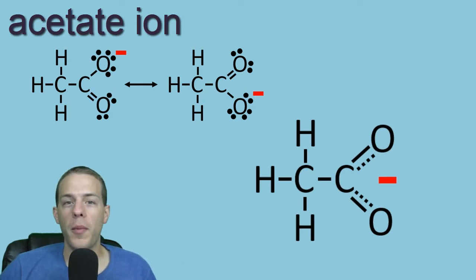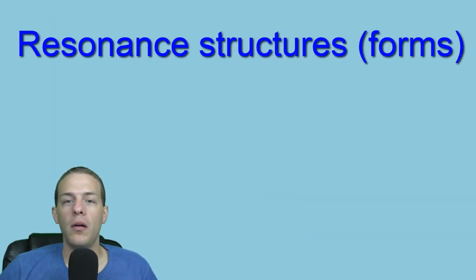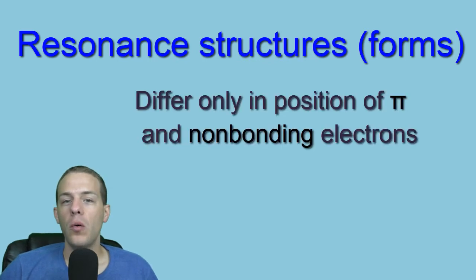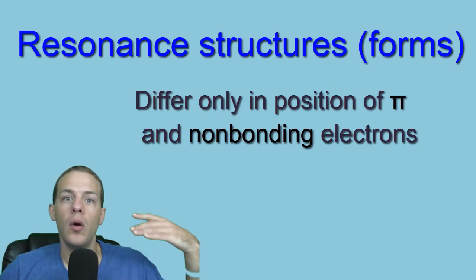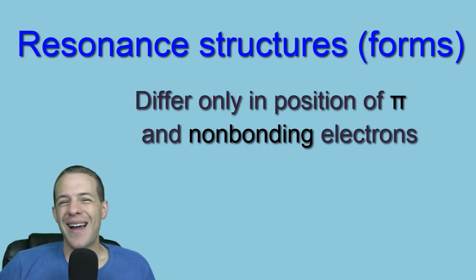So that's why we have resonance structures. It's because the limits of our drawing capabilities sort of force us to represent one structure using one hybrid structure using multiple structures. So more about what resonance forms are, they are Lewis dot structures and they differ only in the position of pi electrons. Again, the ones that are involved in pi bonding in which we have double or triple covalent bonds, never single, pi and non-bonding or the lone pair electrons.